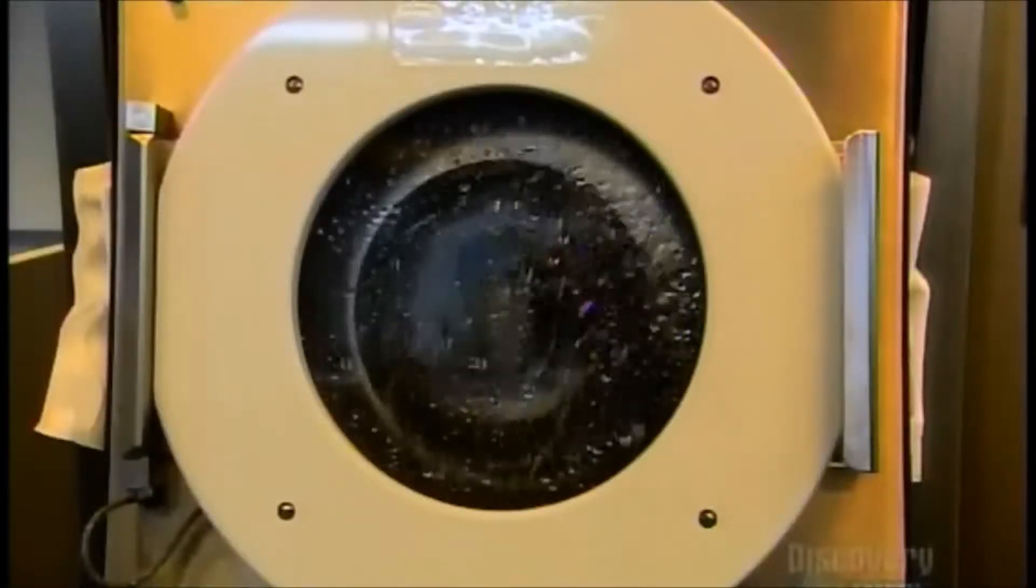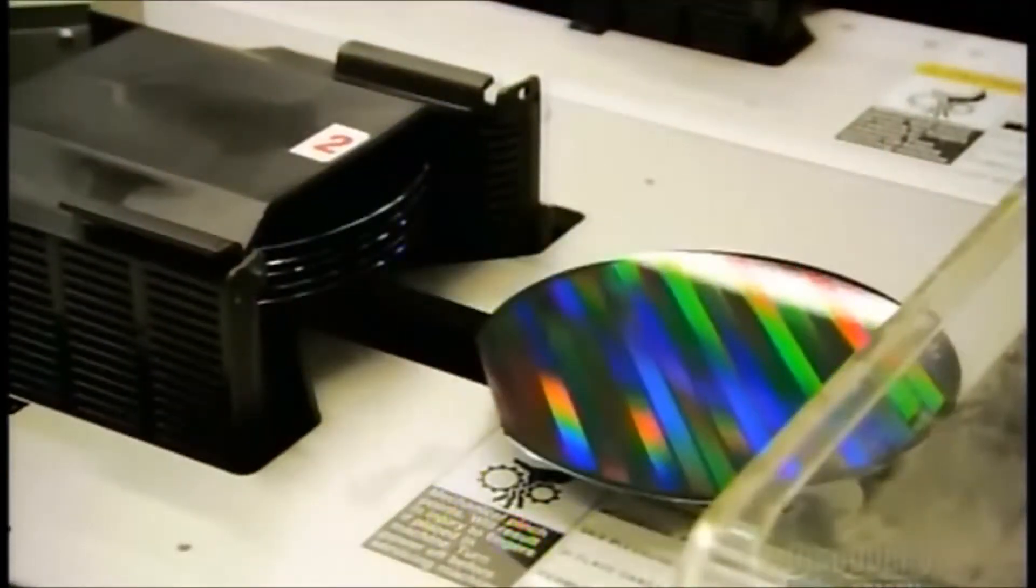Throughout production, contamination is a concern. Just a single speck of dust can ruin a wafer. To protect and insulate the circuitry, they coat the wafer in liquid glass, then bake it for two hours until the glass solidifies.